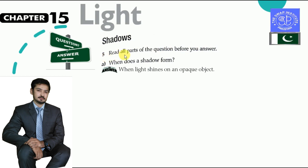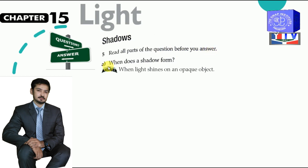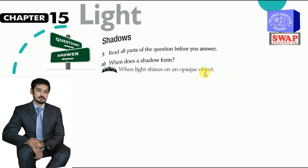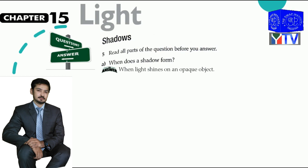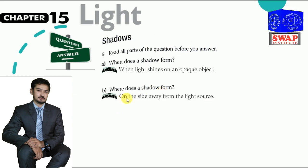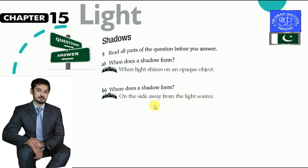Question number five: when does a shadow form? When light shines on an opaque object — otherwise no shadow will form; only opaque objects produce shadows. The B part: where does a shadow form? The answer is on the side away from the light source.